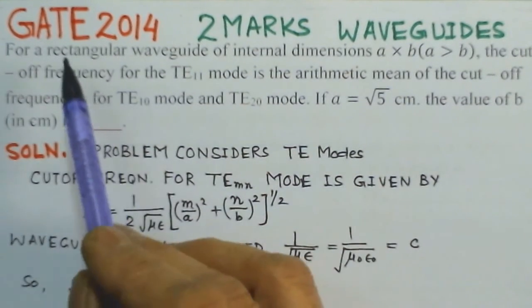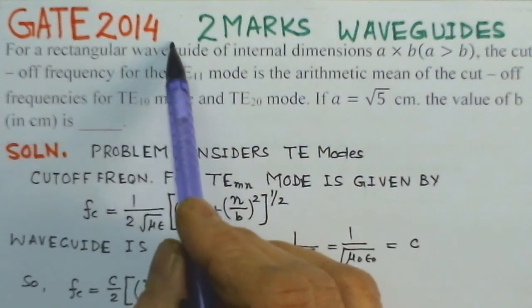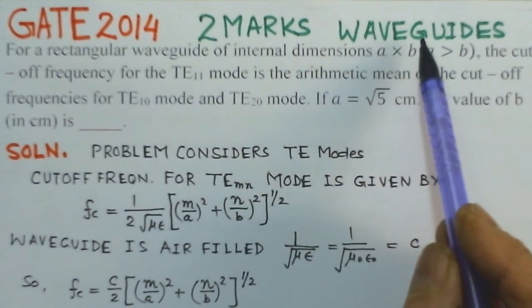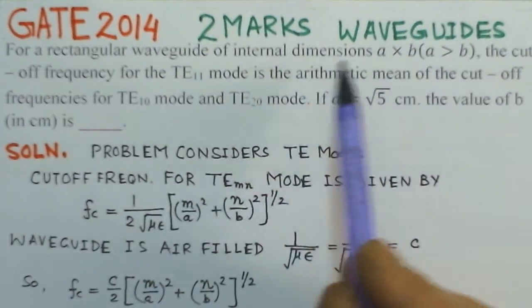The first problem is of GATE 2014. This problem is of two marks on waveguides.